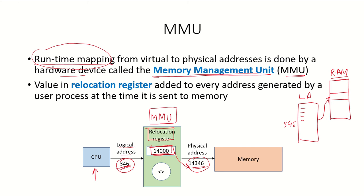This mapping is done by the MMU depending on where the process is given space in the RAM. For another process, the value in the relocation register will be different — each process has a different relocation register value based on where it is placed in RAM. So if process P1 is placed at one location, its relocation register holds a certain value, and if process P3 is placed at a different address and starts running, the relocation register value changes accordingly.